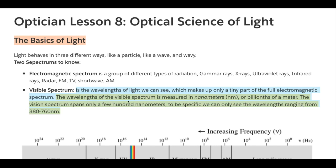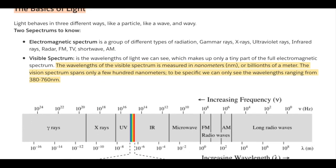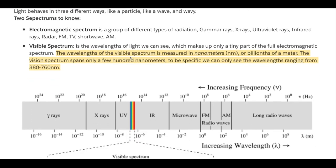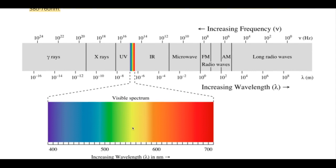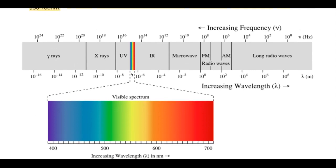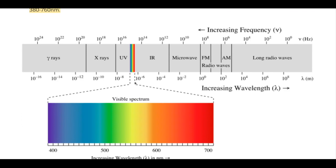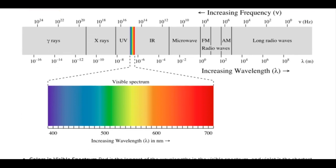The wavelengths of the visible spectrum are measured in nanometers, or billionths of a meter. The visible spectrum spans only a few hundred nanometers. To be specific, we can only see wavelengths ranging from 380 to 760 nanometers. This is information that will be on the ABO exam, so you have to know that the visible spectrum is measured in nanometers and spans from 380 to 760 nanometers.